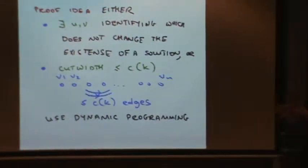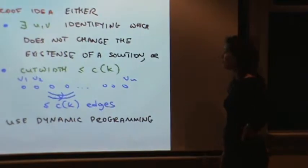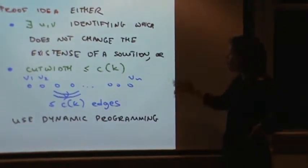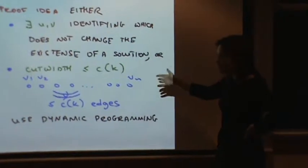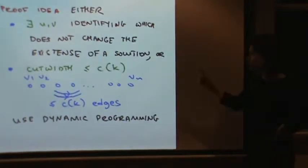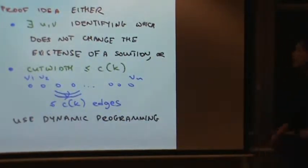If for every gap the number of edges going this way across this gap is at most C, then I say my tournament has cut width at most C. I choose the best order, then look at the worst gap. What they prove is that either you can find two vertices u and v, or your tournament has small cut width, where small is in terms of k, the parameter.